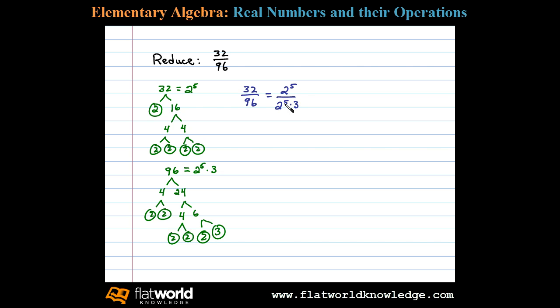We can see five factors of 2 will cancel. Remember, when the entire numerator cancels, there's really a factor of 1 there, and that leaves us with 1/3.